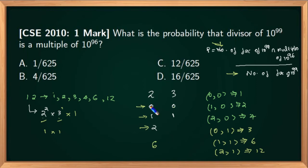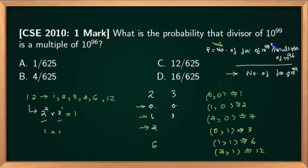By the basic principle of counting, I can take 1 choice from each prime and multiply. I have 3 options for the power of 2 (0, 1, or 2) and 2 options for the power of 3 (0 or 1), giving 3 × 2 = 6 total factors of 12. In the same manner I can factorize 10 raised to 99 and applying the same logic find the number of factors of 10 raised to 99.